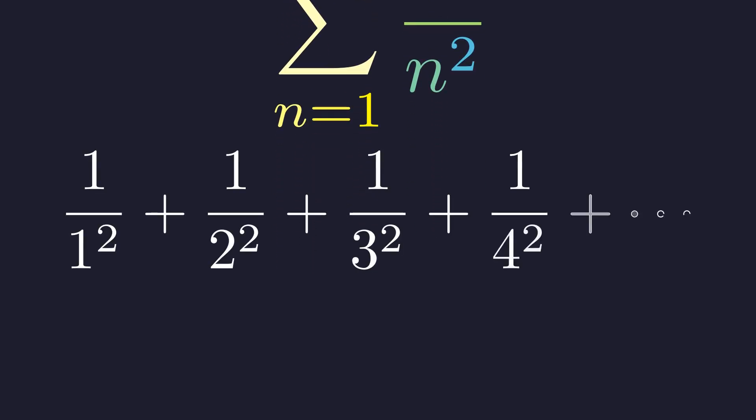That is, 1 plus 1 over 4 plus 1 over 9 plus 1 over 16, and so on forever. We know this series converges to some finite number, but what exactly is it?